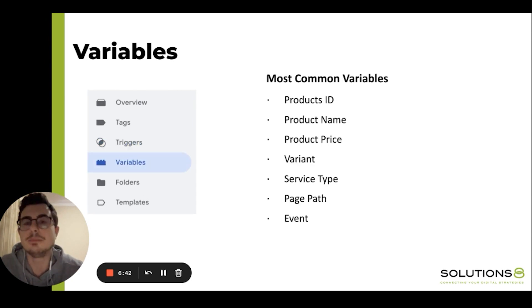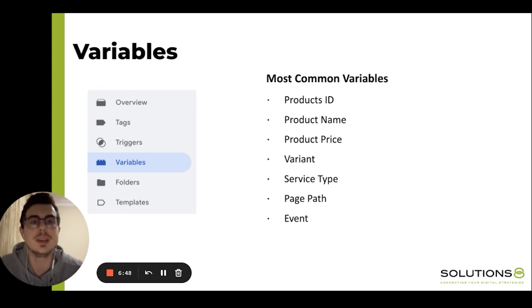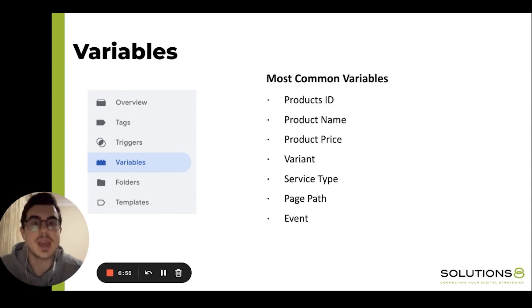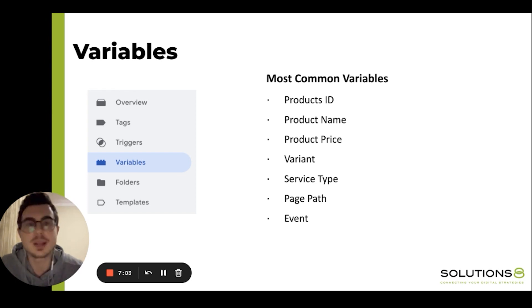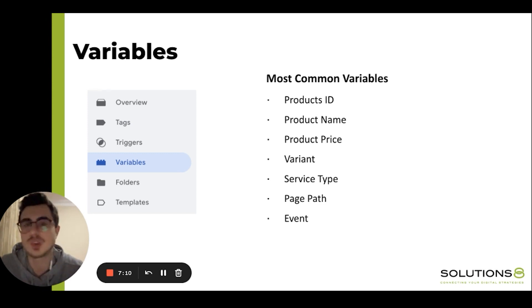Last is Google Tag Manager variables. A variable is a named placeholder for a value that will change, like the page URL, the class of a button, or the cart value. For example, if you want to track add-to-cart button clicks, you'll choose the button click trigger. But if you leave it that way, you will count every button click. That's where the variable comes in — you set the variable for add-to-cart button clicks, and you will be tracking only those clicks.